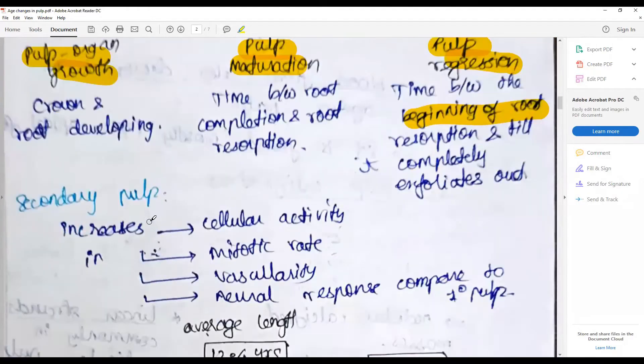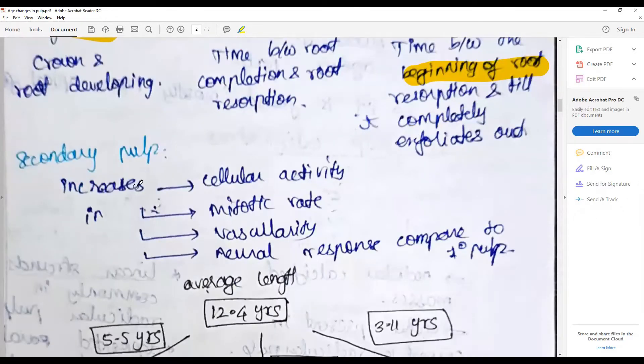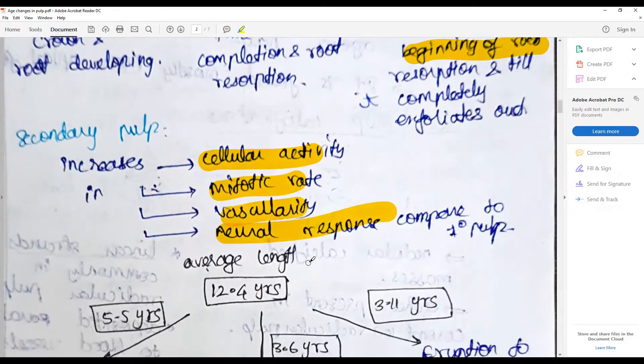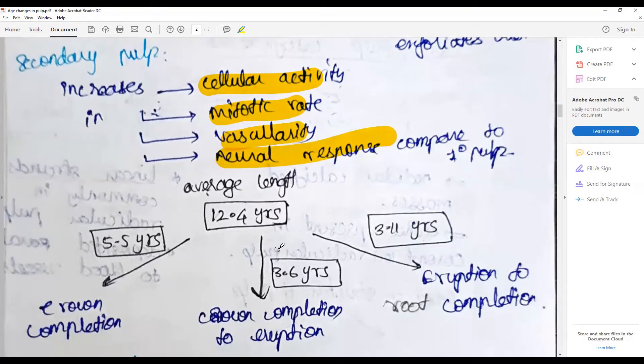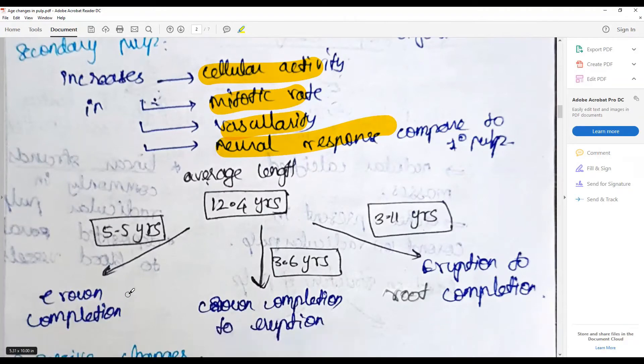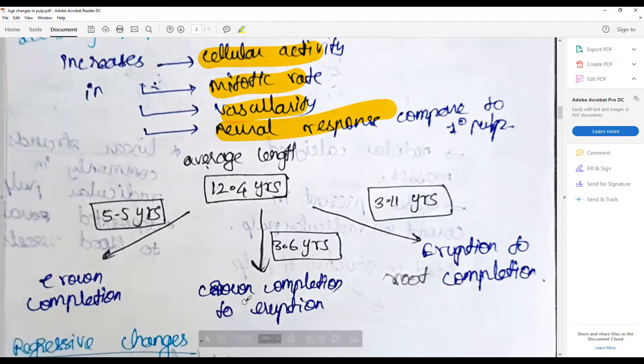Whereas the secondary pulp, the permanent pulp, is relatively increased in cellular activity as mitotic rate, vascularity, and neural response compared to the primary pulp. The average length is about 12.5 years activity: 5.5 years is with relation to crown completion.